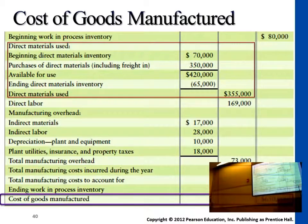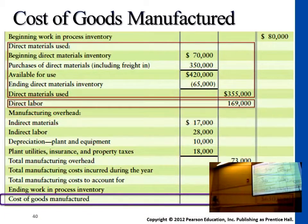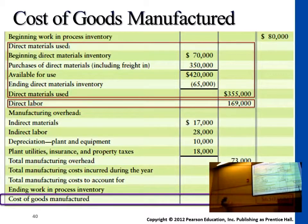So now remember, we still have two more categories. We have direct labor — we also have all the other indirect costs. For direct labor, it tells us here we paid employees $169,000. We move this number over to the second category, since we want to get to the cost of goods manufactured.